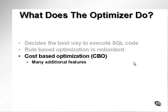Cost-based optimization, or CBO, is the new way of executing SQL code with the optimizer. It has many additional features not available for rule-based optimization. For instance, hints and function-based indexes are only available with CBO and not with rule-based optimization.